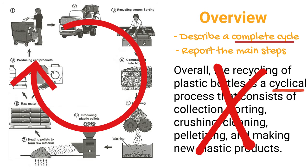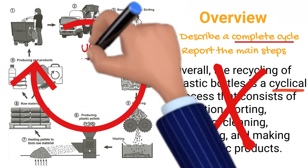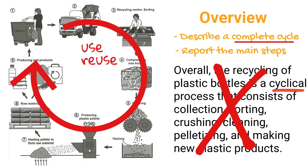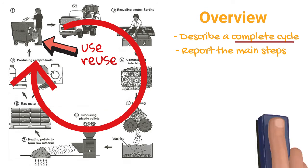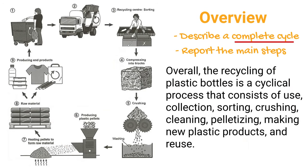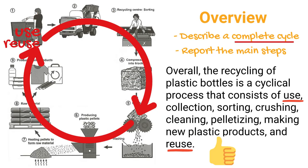To create a cycle, we must include the steps 'use' and 'reuse'. The diagram hints at these two steps by showing the user putting an empty bottle into the bin with no description. 'Overall, the recycling of plastic bottles is a cyclical process that consists of use, collection, sorting, crushing, cleaning, pelletizing, making new plastic products, and reuse.' Now the cycle is complete. This is the right way to write an overview for a cyclical process.